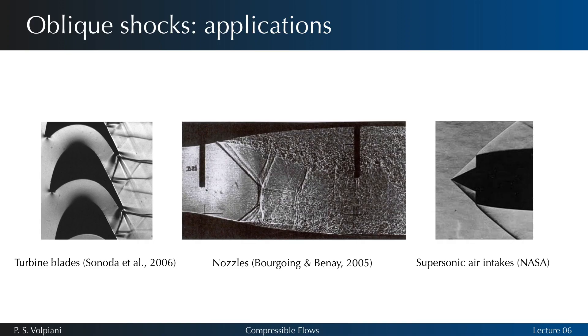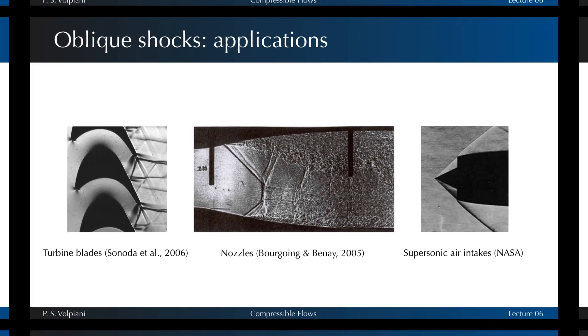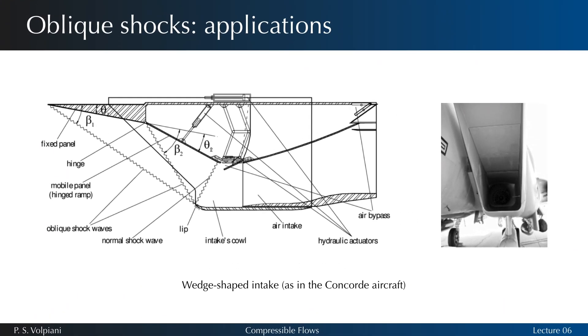Oblique shock waves are present in many aerospace applications. In the case of a supersonic air intake, engineers prefer to have a combination of oblique shock waves rather than a strong normal shock in order to obtain more favorable post-shock conditions, smaller increase in entropy, less stagnation pressure loss, etc.